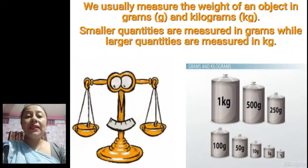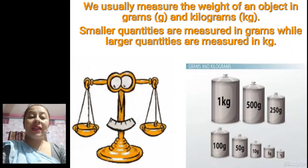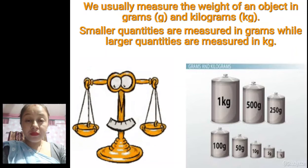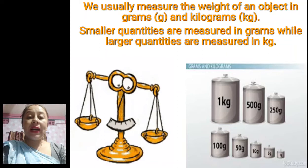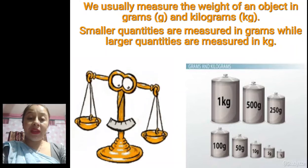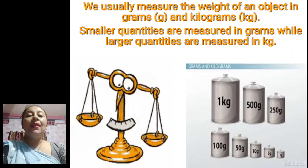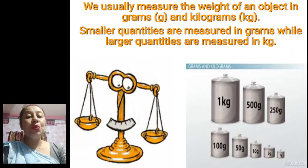We measure objects in grams and kilograms. Smaller quantities are measured in grams — for example, spices are measured in 50 grams, 100 grams. But for larger quantities, like a packet of rice, it starts from 5 kg, 25 kg. So smaller quantities are measured in grams while larger quantities are measured in kg, and 1,000 grams equals 1 kg — as we learned in math class.